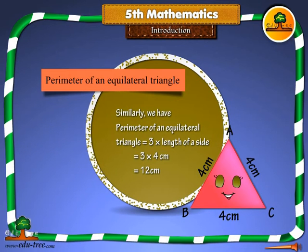Perimeter of equilateral triangle. Similarly, perimeter of equilateral triangle equals 3 into length of a side, equals 3 into 1 m, equals 3 m.